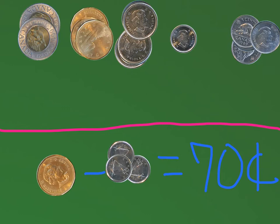so one dollar take away one, two, three, 30 cents equals 70 cents.